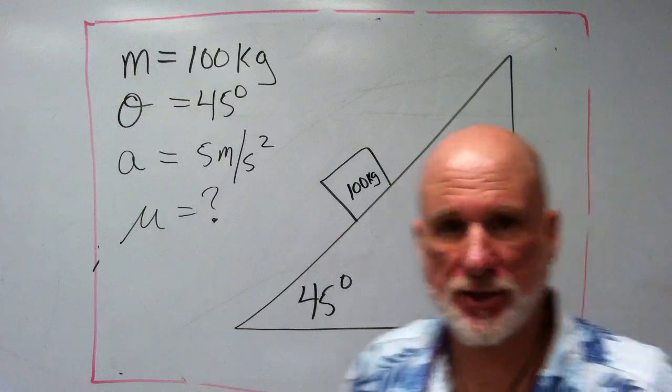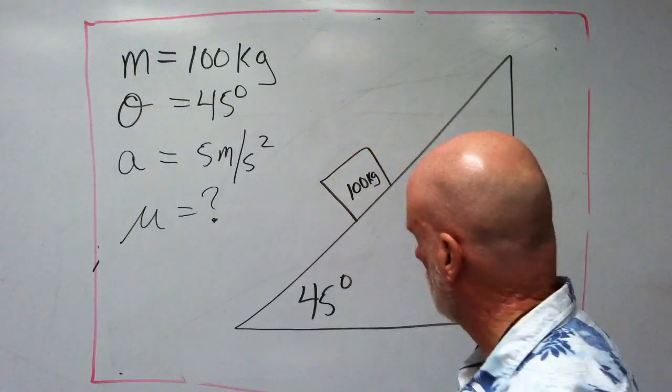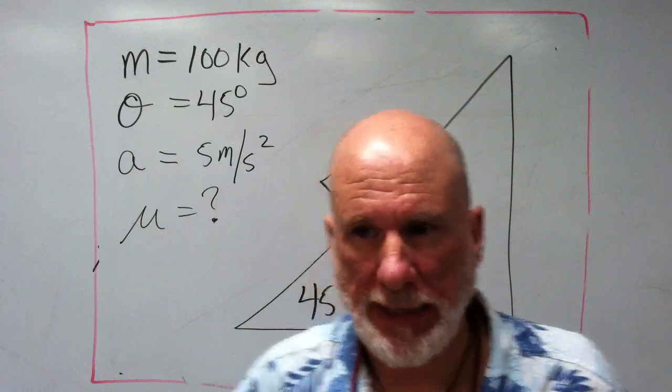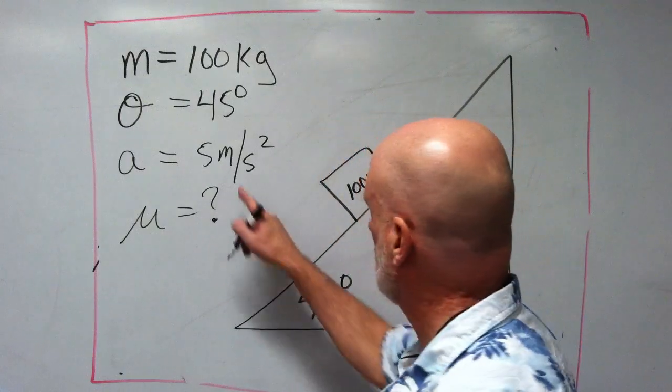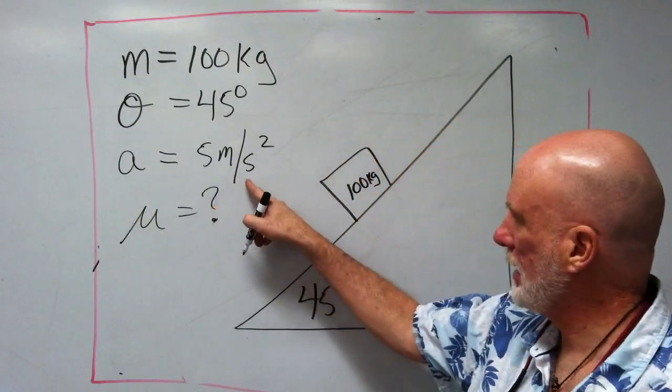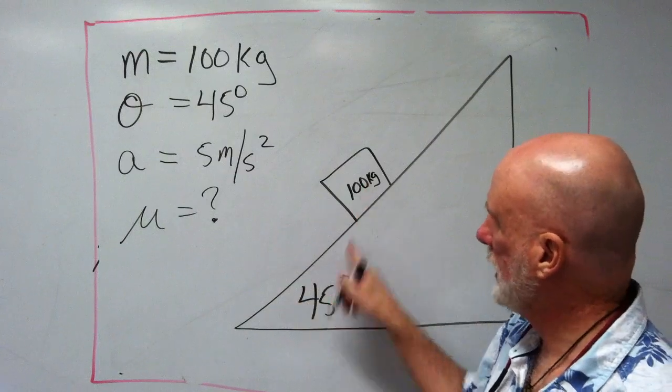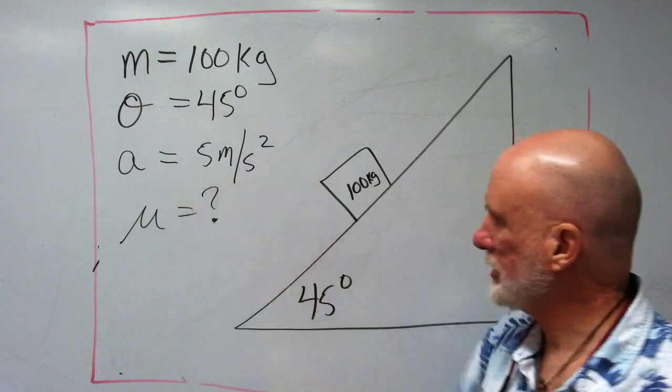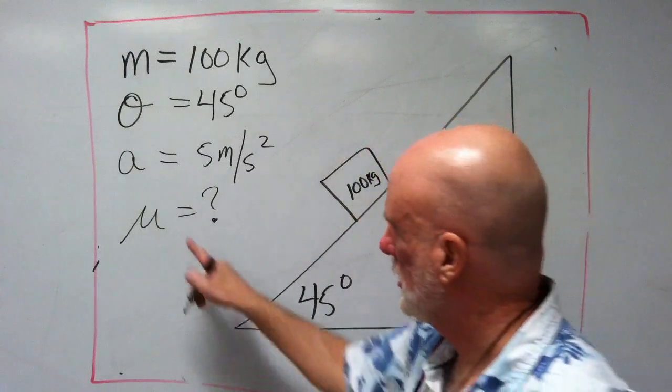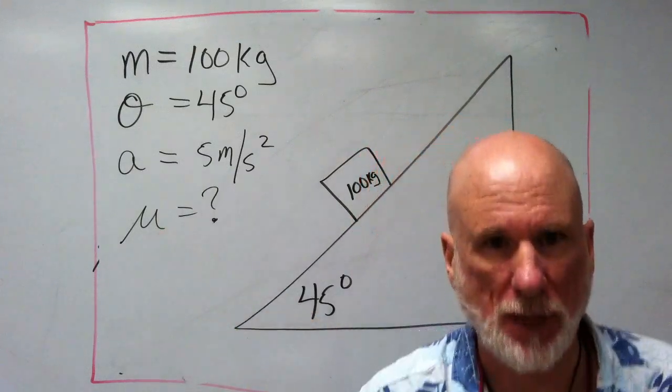That's the mass of the rock. And let's say it's sliding down, it's accelerating at 5 meters per second squared, 45 degrees, and the acceleration is 5 meters per second squared. The question is, what's mu?